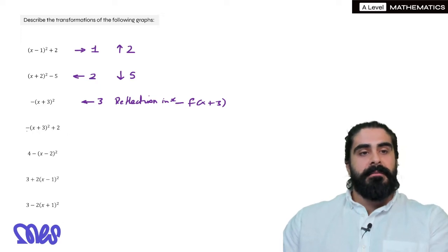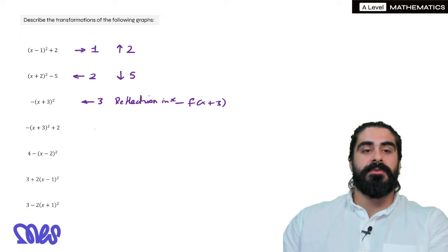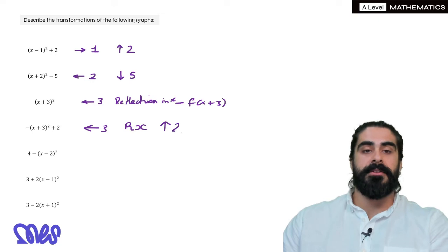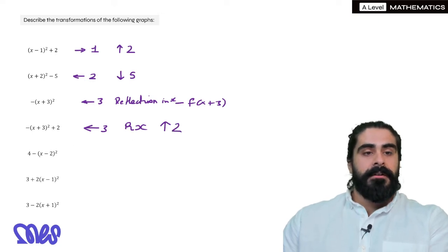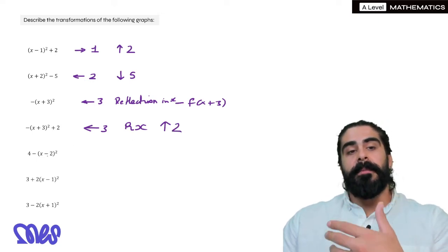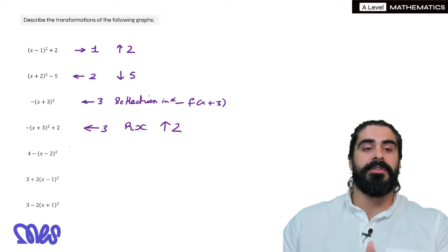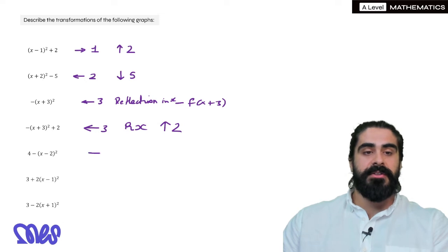Next one: -(x+3)²+2. So the (x+3)² we're moving to the left by 3. Then the minus on the outside means we're going to reflect in the x-axis and the +2 is still going to move us up by 2.